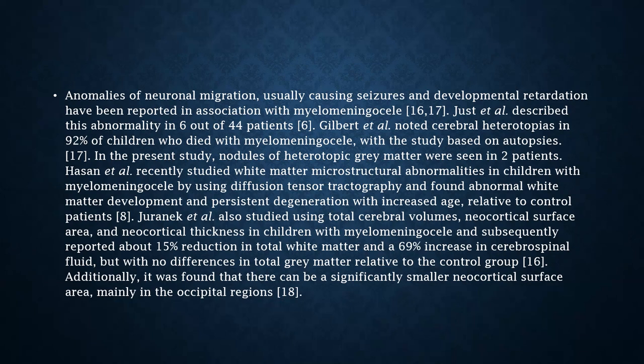Interestingly, Hassan et al. recently studied white matter microstructural abnormalities in children with myelomeningocele using diffusion-tensor tractography and found abnormal white matter development and persistent regeneration with increased age relative to control patients. Juranek et al. studied total cerebral volumes, neocortical surface area, and neocortical thickness in children with myelomeningocele and reported about 15% reduction in total white matter and 69% increase in cerebrospinal fluid, but with no difference in total gray matter relative to the control group. Additionally, it was found that there can be a significantly smaller neocortical surface area mainly in the occipital regions.